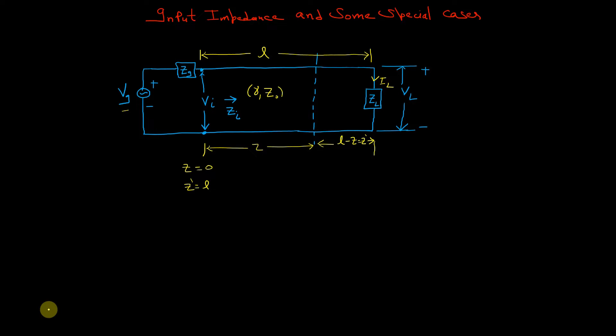Welcome. Today we will discuss input impedance for a transmission line and some special cases for input impedance, like open circuit termination, short circuit termination, quarter wave and half wave sections. We have already covered and derived this input impedance for a finite transmission line — you can see the previous video, the link is in the description.